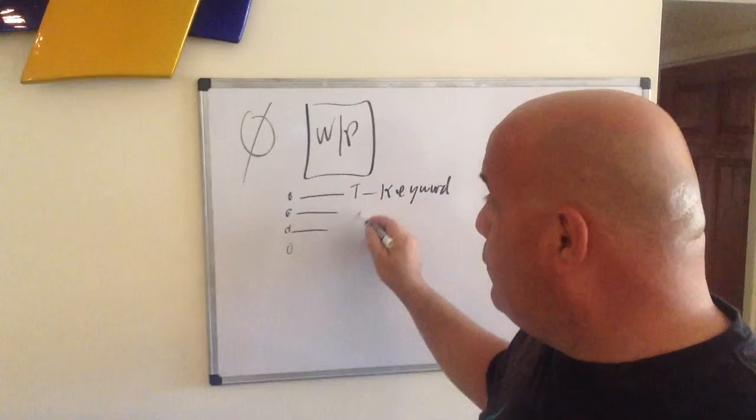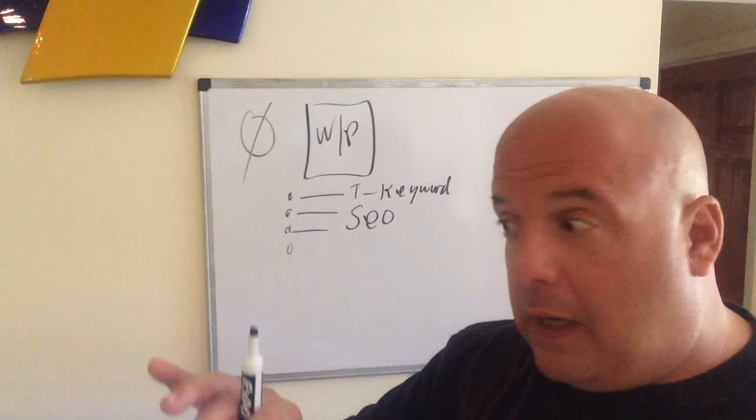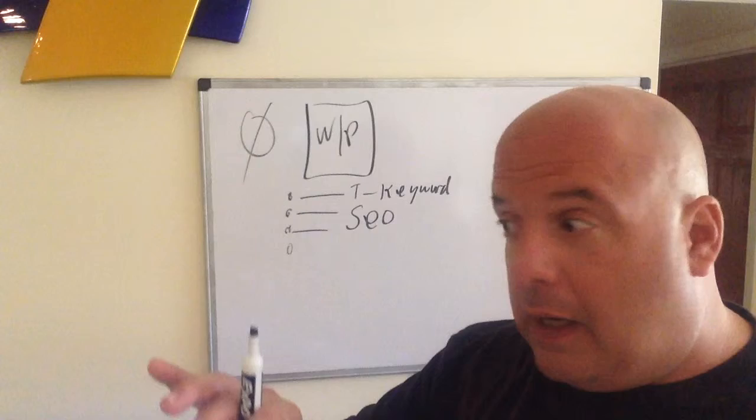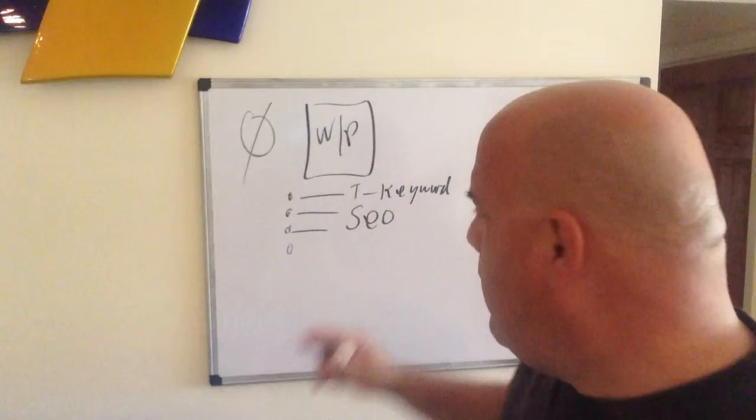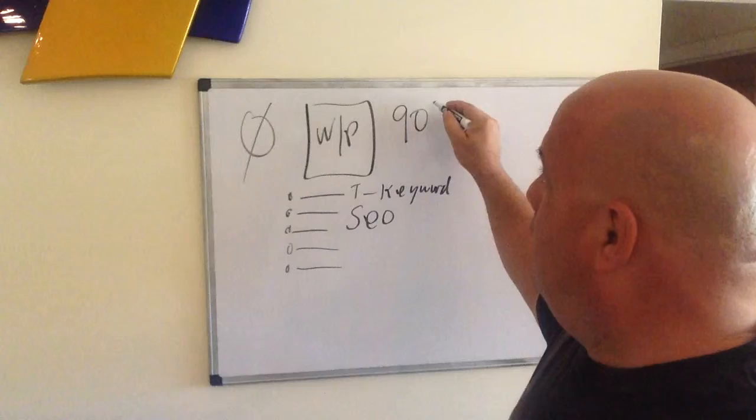Doing on-page SEO, SEO on-page meaning sprinkle the keywords in, put pictures in, name the pictures with the right keywords, put the alt tags in, everything you do for on-page SEO. We built the site and it started doing good. It took over a year to really start producing.